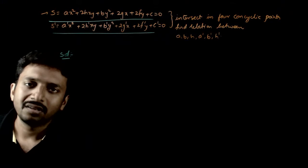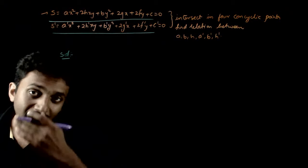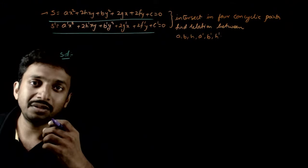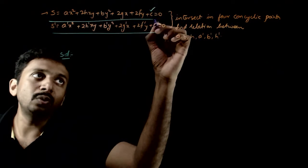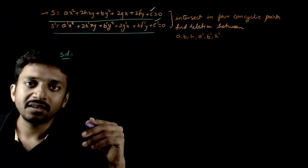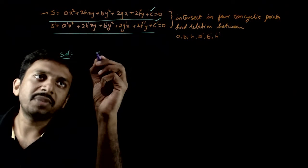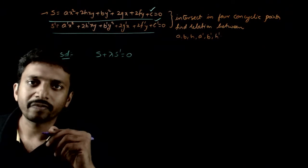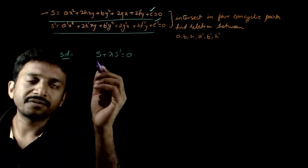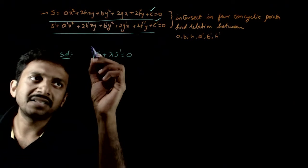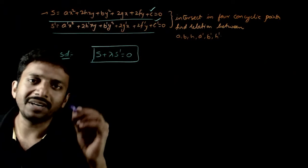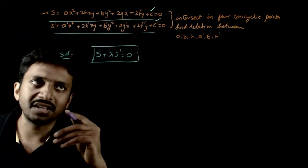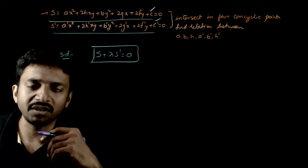Now, how do I do this question? I will use the concept that any curve passing through the intersection of two given curves S = 0 and S dash = 0 is given by S + λS dash = 0.